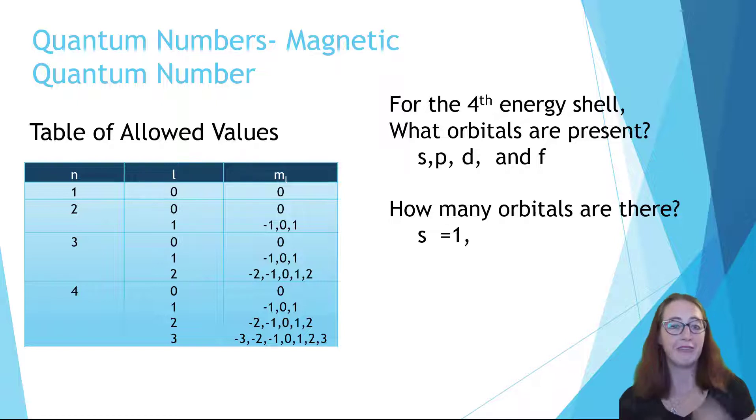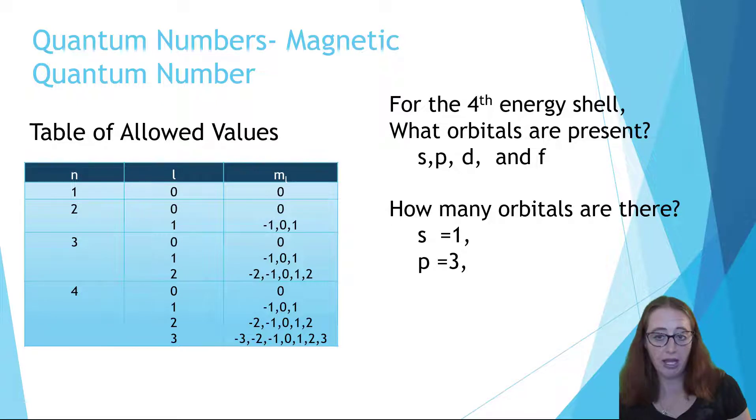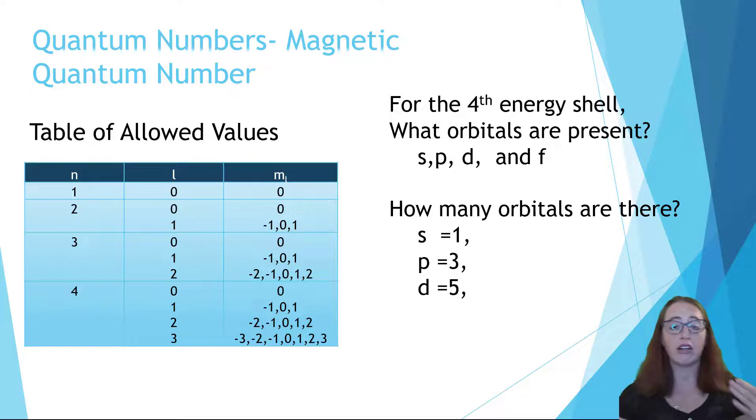In this case, one four s orbital. When l is equal to one, the m sub l value is allowed to equal negative one, zero, and one. And so there are three p orbitals within this energy level. When l is equal to two, m sub l is allowed to equal negative two, negative one, zero, one, and two. And so there are five d orbitals.